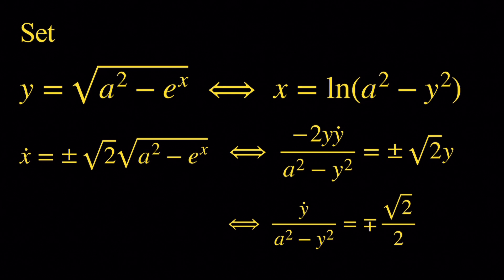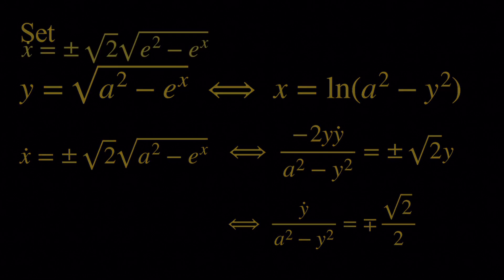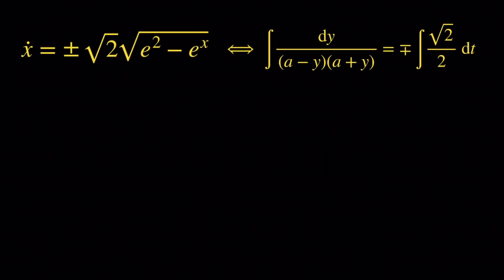Now we integrate. We get that the integral of 1 over (a minus y)(a plus y) dy equals plus or minus the integral of root 2 over 2 dt.